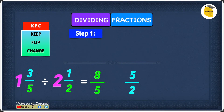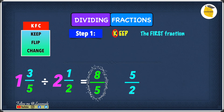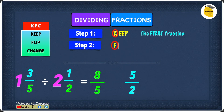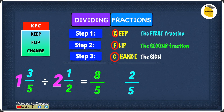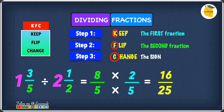Once we have the improper fractions, we apply KFC just as before. Step 1 — K for Keep: keep the first fraction, 8 over 5, as it is. Step 2 — F for Flip: flip the second fraction, 5 over 2, to get 2 over 5. Step 3 — C for Change: change the division sign into multiplication. Now we find 8 times 2 and 5 times 5. 8 times 2 is 16 and 5 times 5 is 25, so the answer is 16 over 25.